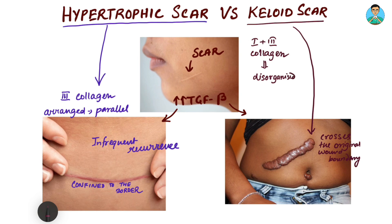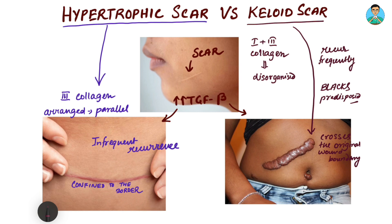The collagen arrangement is disorganized, and hence it takes an irregular shape as you can see over here. Recurrence is frequent, and it is particularly predisposed in Black individuals, who have a higher risk. So this is what in brief you should know about hypertrophic scar and keloid scar.